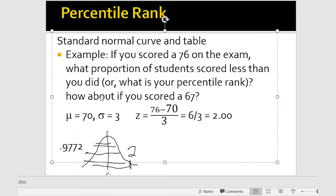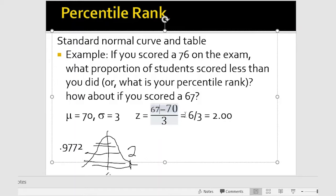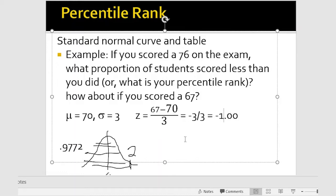Now how about the second part: what if you scored a 67 instead of 76? We put 67 in here, and now we're looking at negative 3 in the numerator, so negative 3 divided by 3 gives us negative 1.